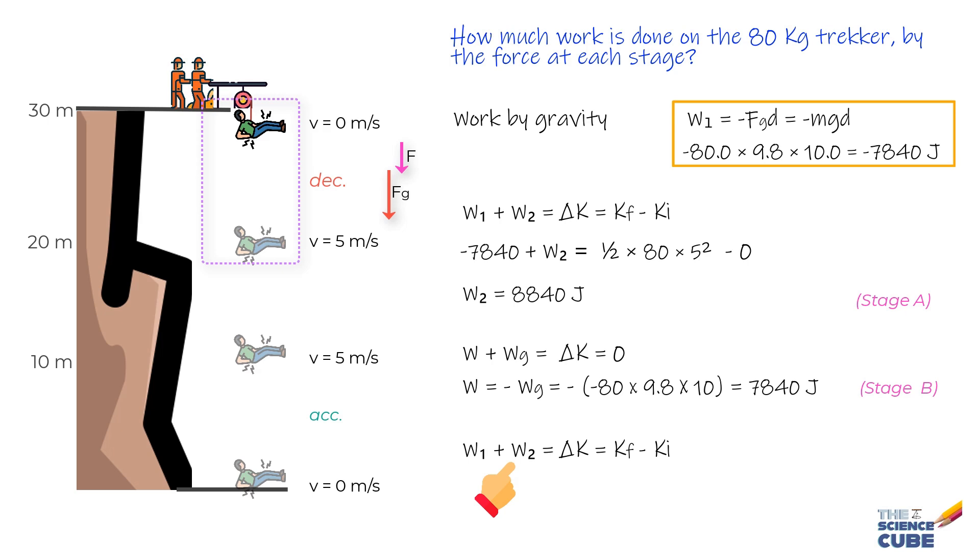The work done to decelerate him by the lifting force is W₂. Again, using the work energy theorem W₁ plus W₂ that is the total work done should equal to the change in kinetic energy which is KF minus K initial. Substituting values we get minus 7,840 plus W₂ equals 0 minus half into 80 into 5 square or W₂ equals 6,840 joules.